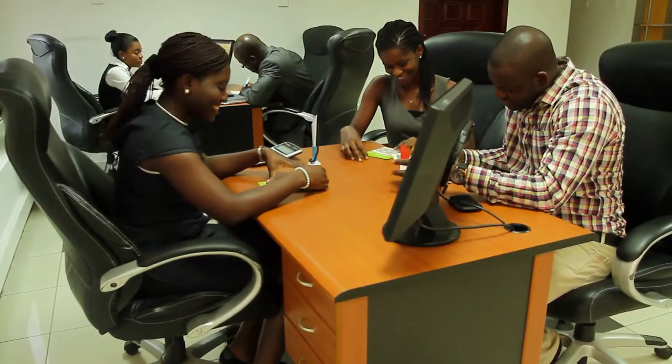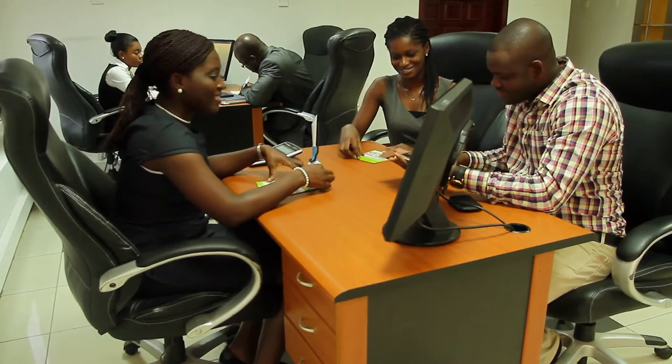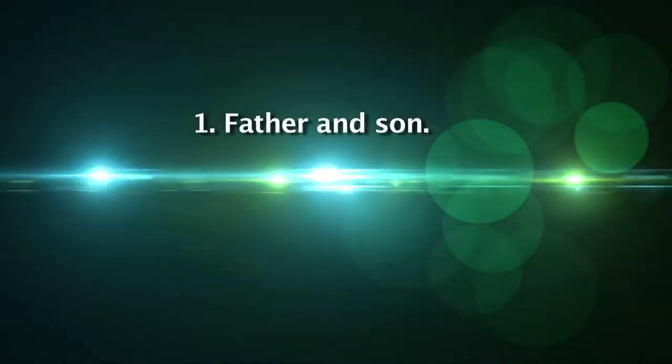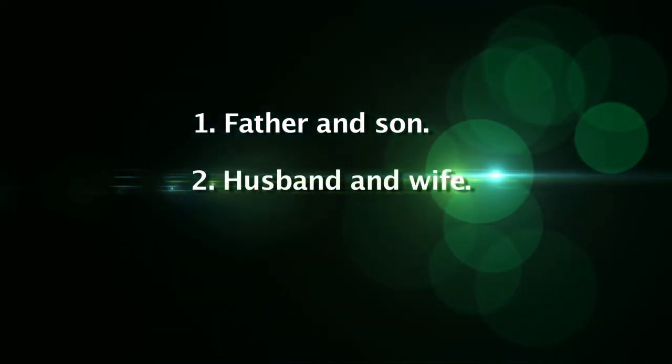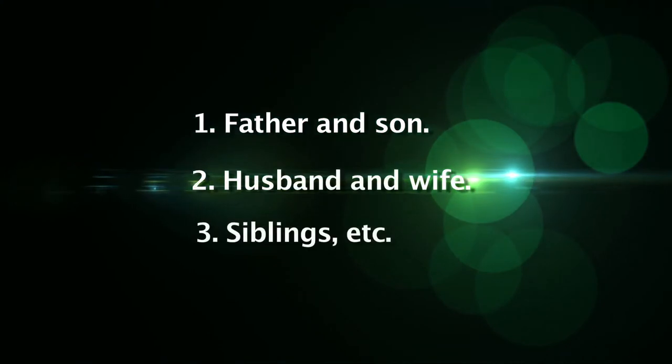5. Joint applicants need to indicate the nature of their relationship, for example, father and son, husband and wife, siblings, etc. Ghana Home Loans may choose to decline a joint application on the basis of the nature of the relationship.